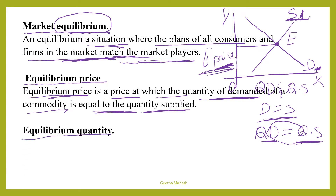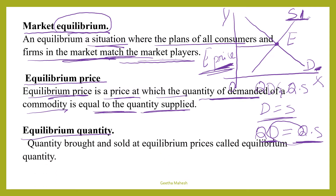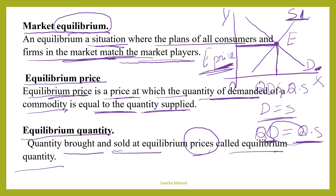What do you mean by equilibrium quantity? Equilibrium quantity is the quantity bought and sold at equilibrium price. Equilibrium price is the price at which quantity demanded is equal to quantity supplied, and the quantity bought and sold at that equilibrium price we call it as equilibrium quantity.